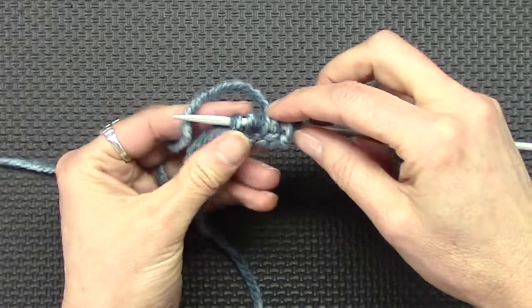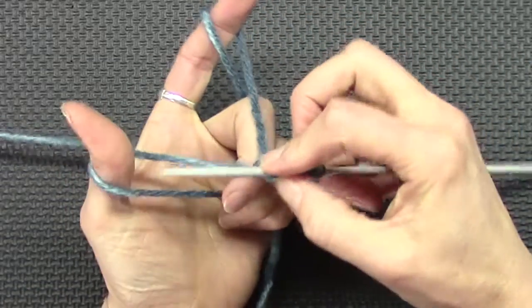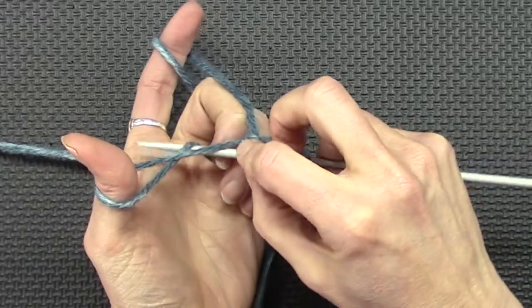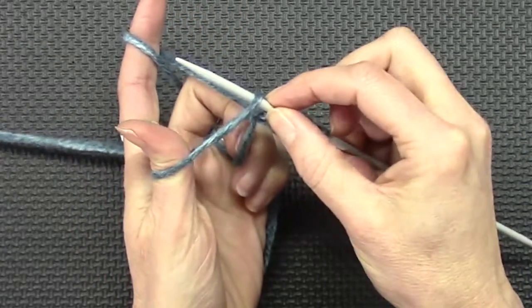Very similar to the long tail cast on with some extra movements. This bottom one is probably the easiest maneuver, this part one. Around both yarns and into the thumb.